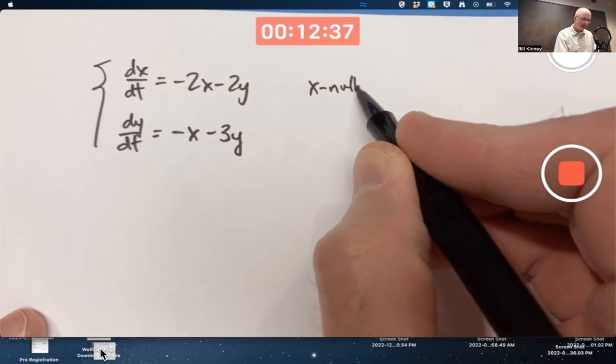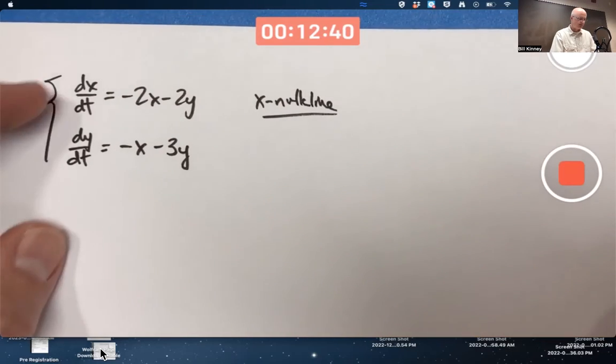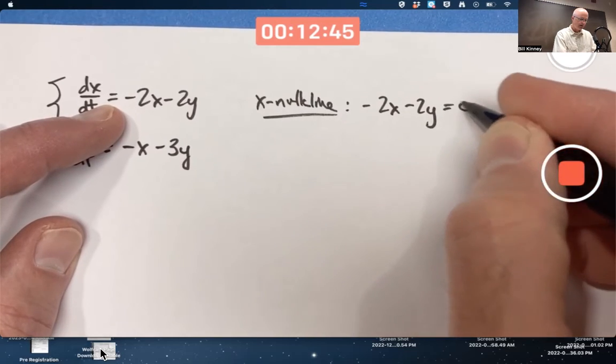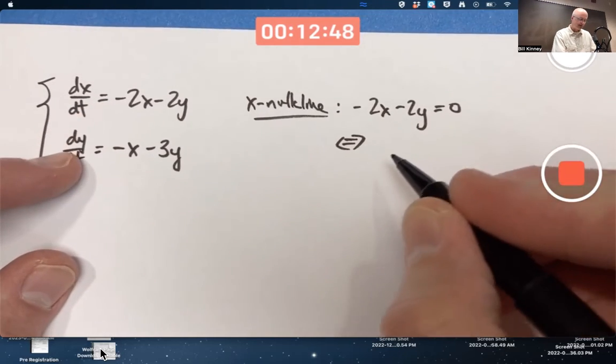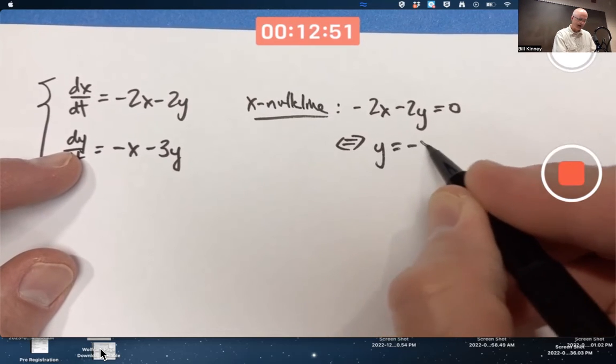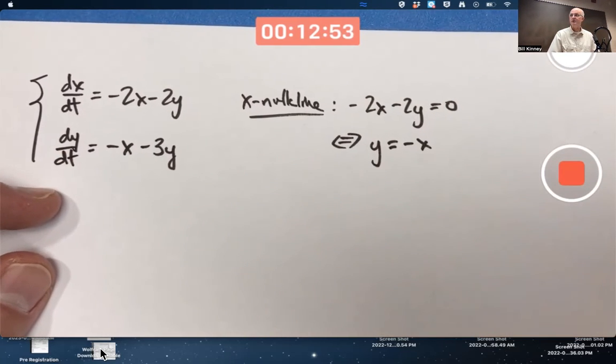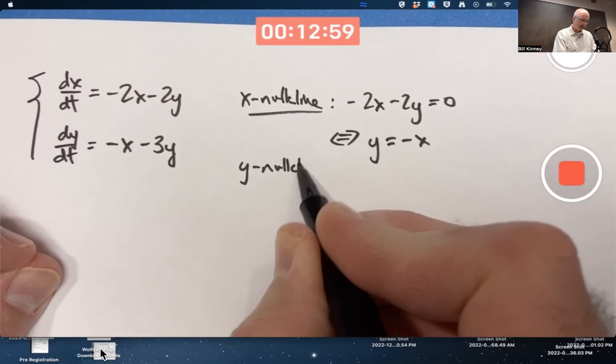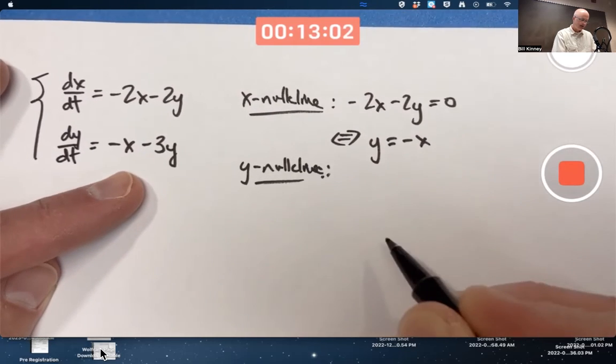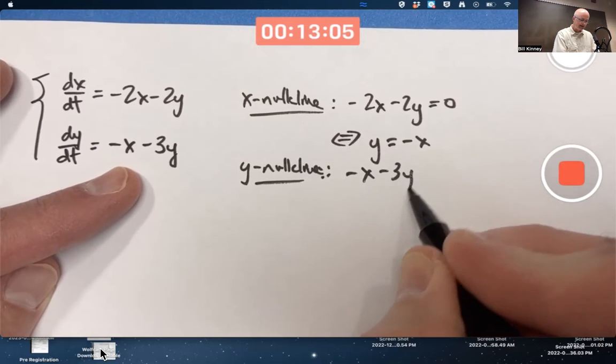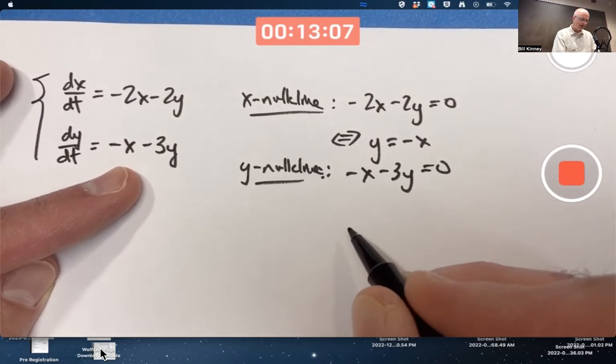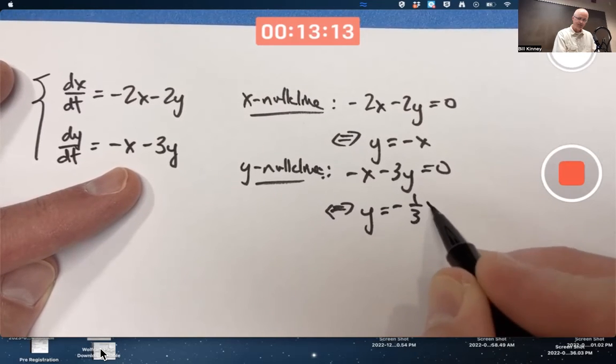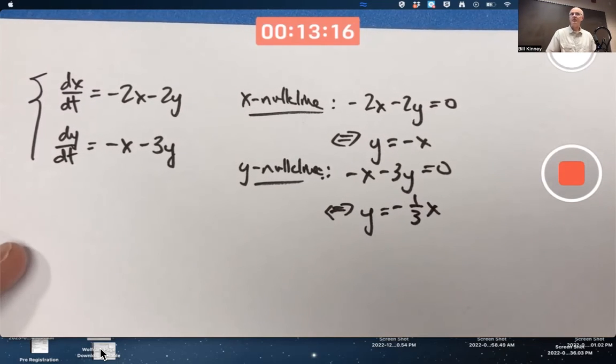The x null cline is where dx/dt is zero. So that's equivalent to -2x - 2y = 0. Solving that for y as a function of x, that's the same as y = -x, a line through the origin with a slope of negative one. The y null cline is where dy/dt equals zero. That's -x - 3y = 0. Once again, solve for y as a function of x. You'll get y = -1/3 x, a line through the origin with a slope of -1/3.